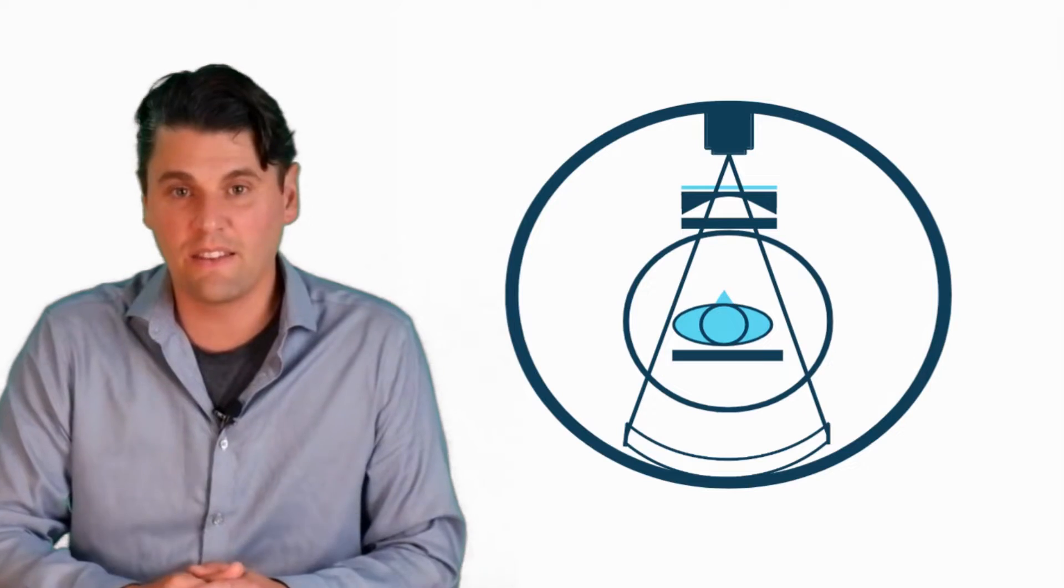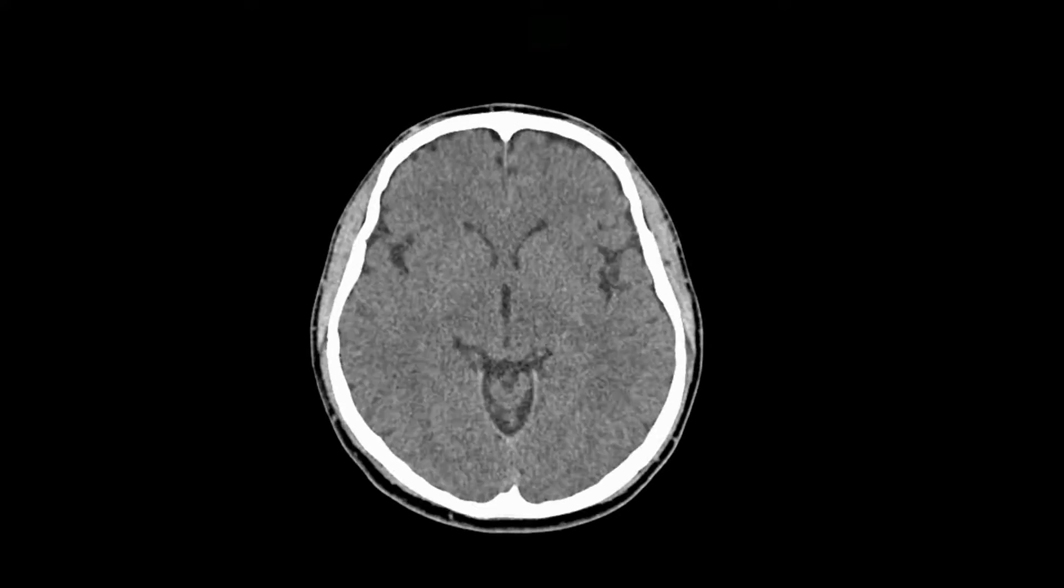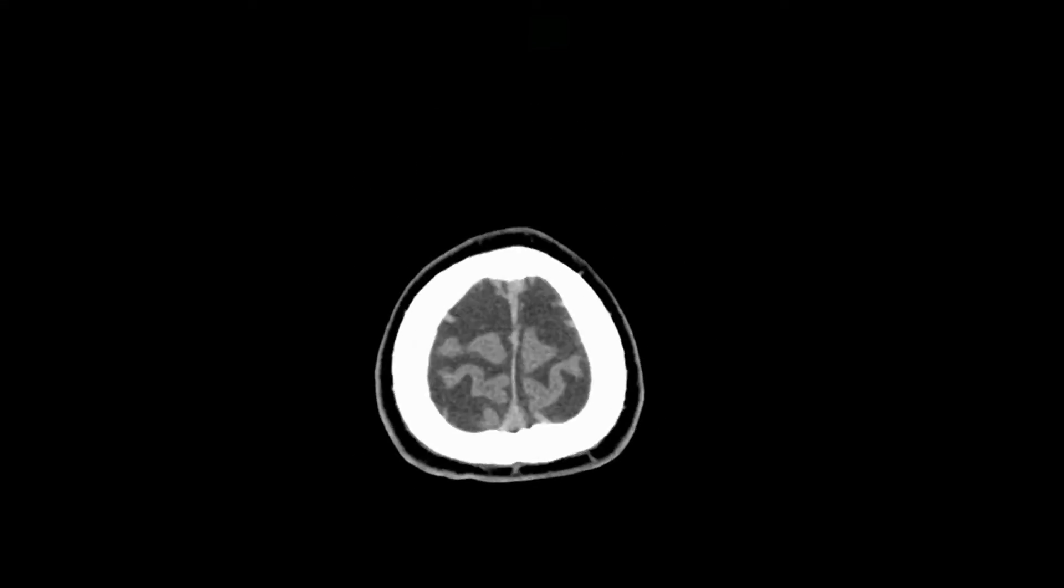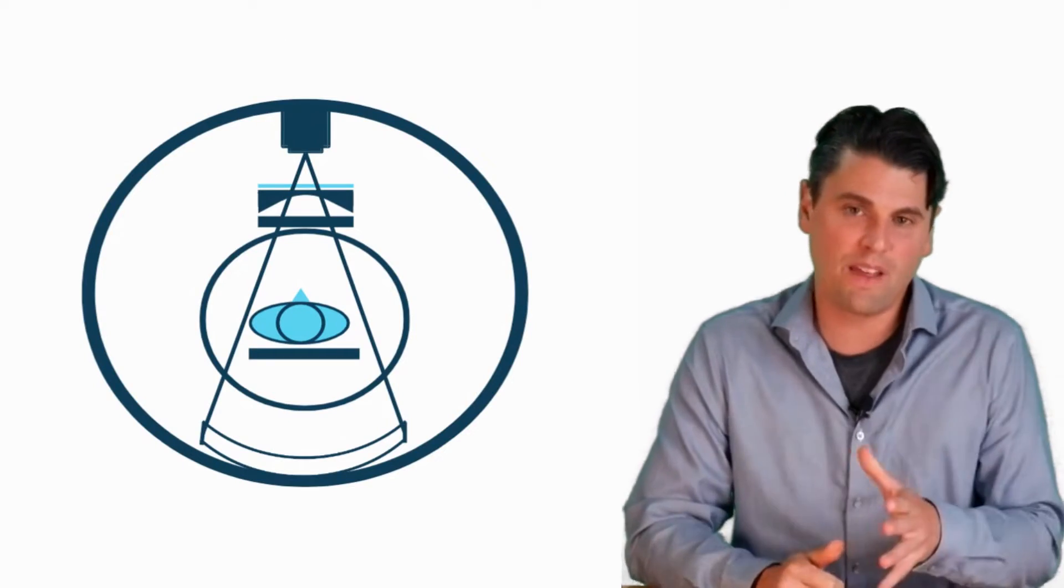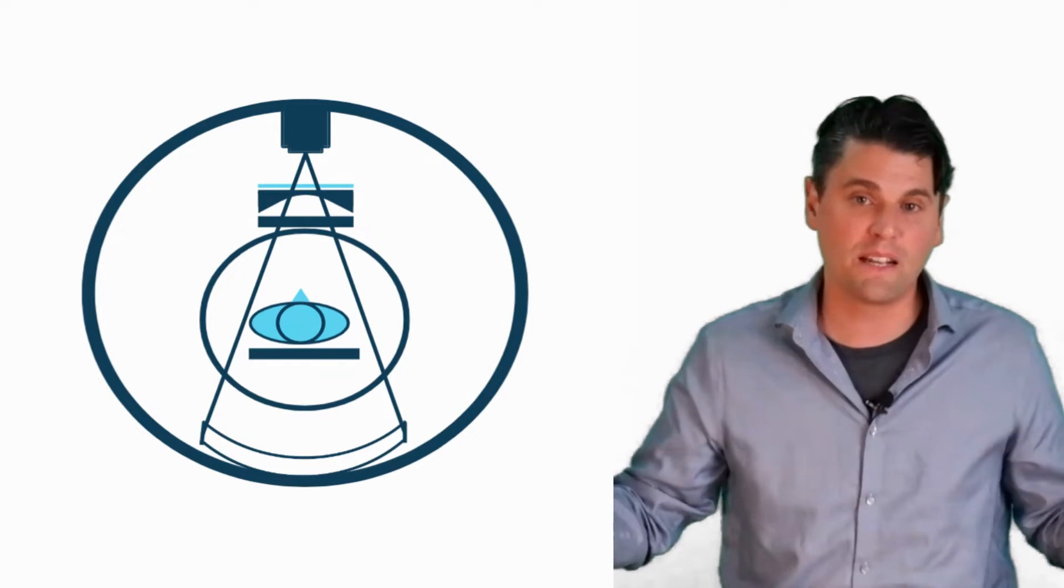So essentially in CT, we're taking the data from all the views. In order to estimate the 3D volume, we use a process called reconstruction. So we're going to talk in just a minute about the steps of that reconstruction process and how they can be affected if our object is too big.